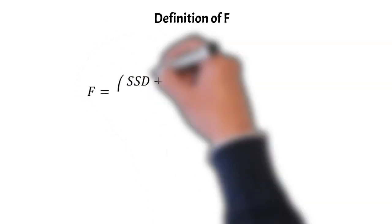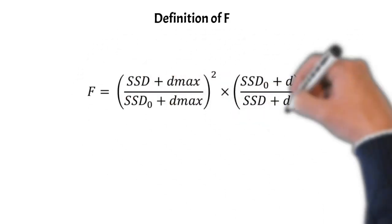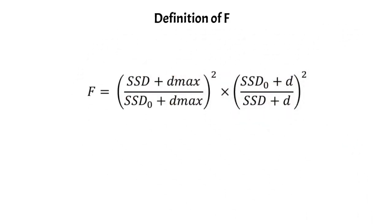So we can start with a mathematical definition of the Maynard factor, or f for short, and this is the mathematical definition here. It's just a product of two different inverse square corrections, and it seems kind of arbitrary at first, but we are actually going to derive this factor a little bit later in the video, which I think will be helpful in understanding where these two terms come from and why they're important.